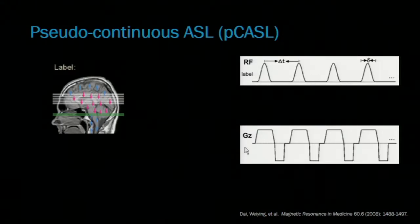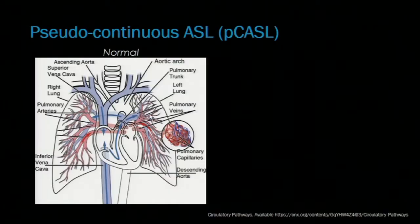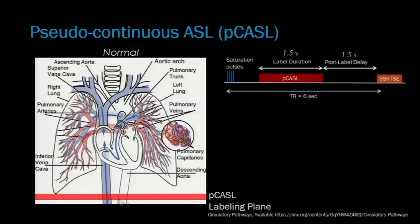Using a train of RF pulses with a selection gradient, we create a labeling plane that will invert blood flowing perpendicularly through the plane. For our control sequence, we phase cycle the RF pulses for a net result of no inversion on the inflowing blood. We've applied this technique in normal circulation by labeling the IVC so that labeled blood will first mix in the right heart before splitting and going to the lungs through the pulmonary arteries.